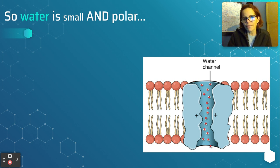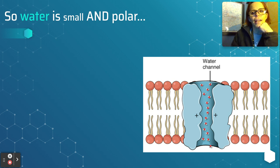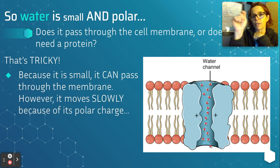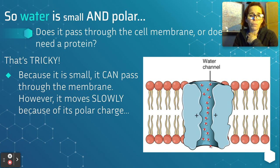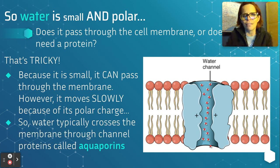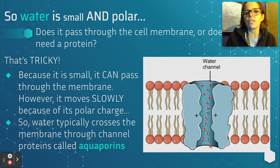Water is small — we said small non-polar things can go between the lipid bilayer, but water is small and polar. So can water cross the lipid bilayer? It turns out that's a tricky answer. Because it's small, it can actually pass through the lipid membranes between the phospholipids; however, it moves really slowly because it's polar. To be more efficient in gaining or losing water, cell membranes have channel proteins called aquaporins — aqua means water, and pores are little tunnels that allow water to go scooting through quickly. Water typically crosses the membrane through channel proteins called aquaporins.